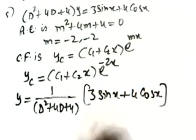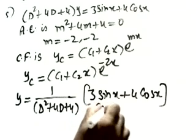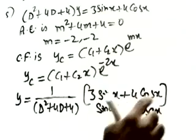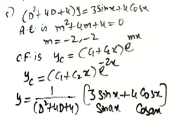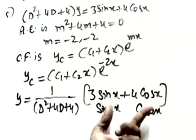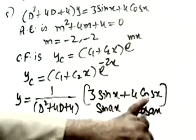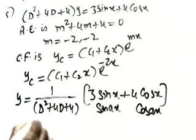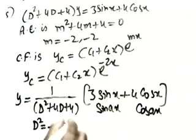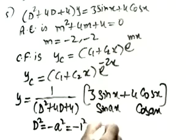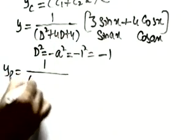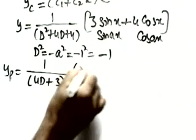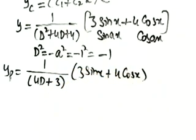For the particular integral: yp = 1/(d²+4d+4) · (3sin(x) + 4cos(x)). Comparing sin(x) and cos(x) with sin(ax), a = 1 for both, so substitute d² = -1² = -1. The denominator becomes -1 + 4d + 4 = 3 + 4d. Therefore yp = 1/(4d+3) · (3sin(x) + 4cos(x)).